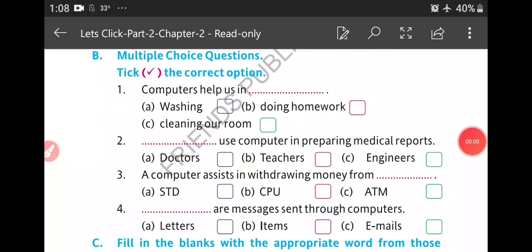Now part B, multiple choice questions. Tick the correct option. Question number one: computers help us in dash. Answer: doing homework. Second: use computer in preparing medical reports. Answer is doctor. A computer assists in withdrawing money from ATM, or messages sent through computers: email.